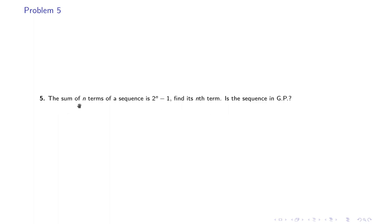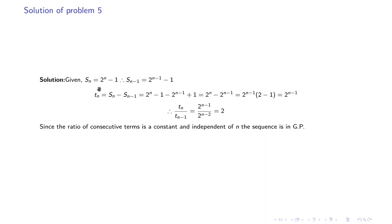The fifth problem: the sum of n terms of a sequence is 2^n - 1. Find the nth term and determine if the sequence is in GP. We have S_n = 2^n - 1 and S_(n-1) = 2^(n-1) - 1. Subtracting gives T_n = 2^(n-1). Dividing T_n by T_(n-1) gives a constant ratio of 2, independent of n, confirming the sequence is in GP.